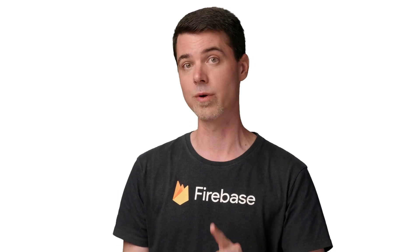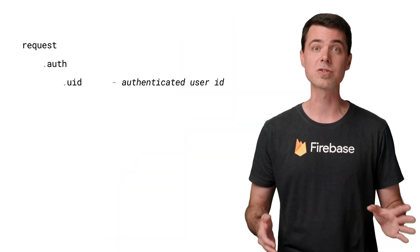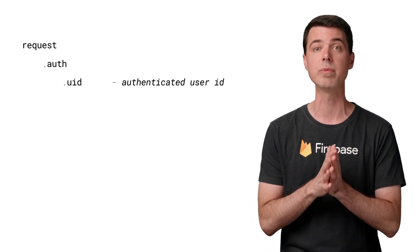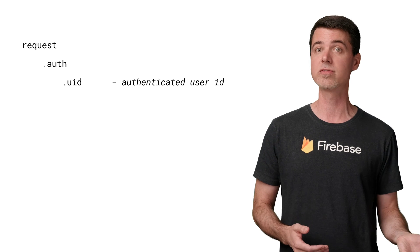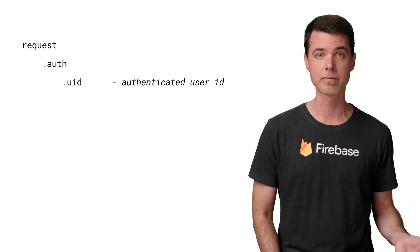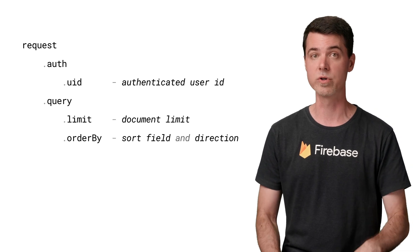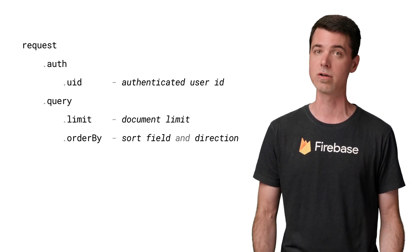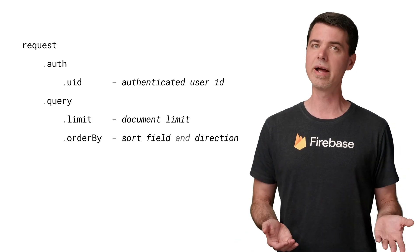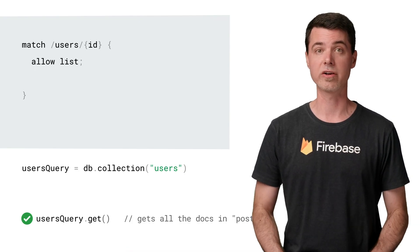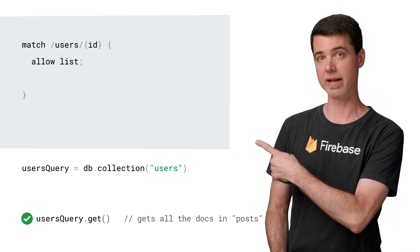But if you do want to allow queries, but only certain kinds of queries, security rules can help you out. You've already seen that there is a special global object called request that gives you some information about the incoming request being checked by security rules. We've used that to access the authenticated user ID. Another request property is called query, which is an object that contains some information about the query currently being performed against a collection. It doesn't apply to document gets, only queries. Let's say you have a very large collection called posts, and you want to restrict the number of documents that a client can request from it for a single query. You can modify your rules to enforce that. If a client app requests all the documents in the collection, the query in the rule that allows it might look something like this.